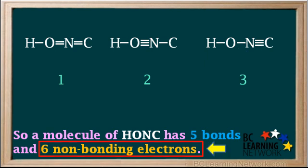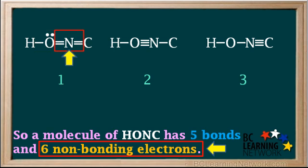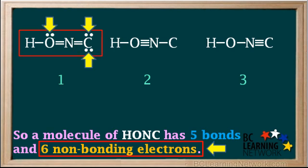Our next step is to add the six non-bonding electrons to each structure so that O, N, and C all have stable octets. Remember, hydrogen is stable with one bond. In structure one, we add one lone pair to the oxygen. The combination of three bonds and one lone pair gives oxygen a total of eight electrons, so oxygen has a stable octet. Nitrogen has four bonds, so it's already sharing eight electrons and has a stable octet. Adding two lone pairs to carbon will also give it a stable octet. We've now added all six non-bonding electrons to structure one.